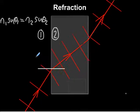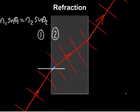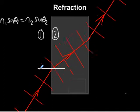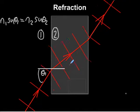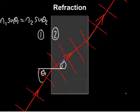So the ray of light is going from medium 1 into medium 2 at this point. Therefore, this angle here is theta 1 and this angle is theta 2.